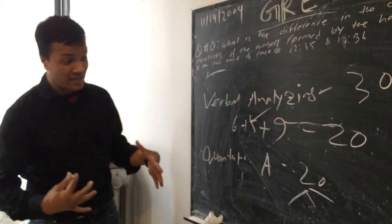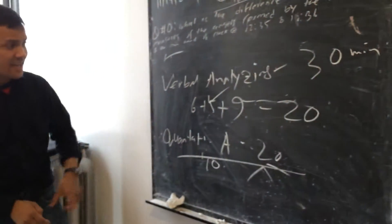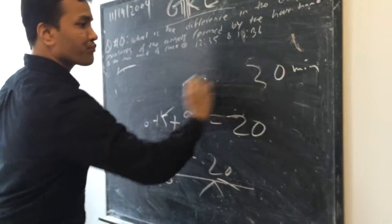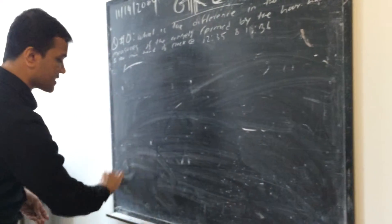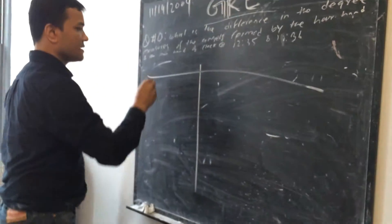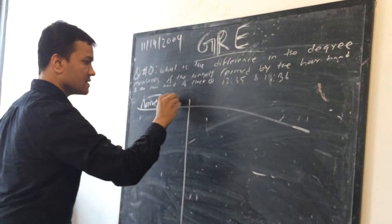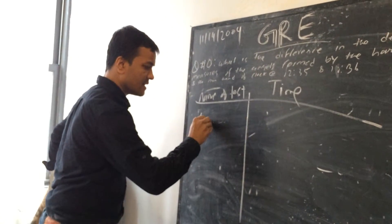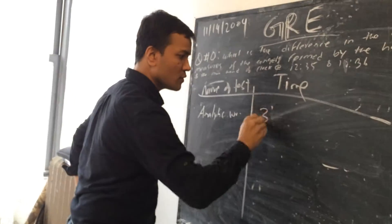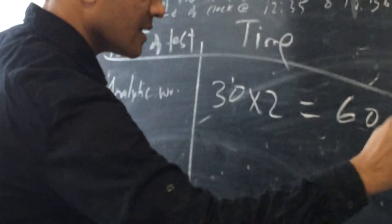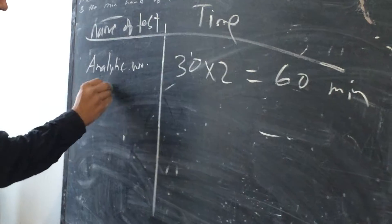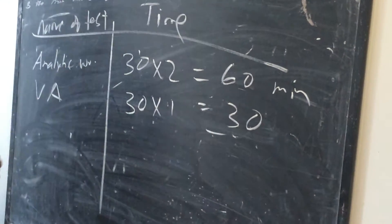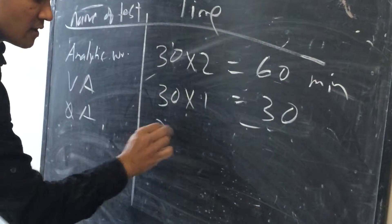There are also Quantitative Analysis questions — 20 questions divided into three parts: quantitative comparison, data interpretation, and discrete question types. After these sections you get a 10-minute break, then again Verbal Analysis and then Quantitative Analysis in the same way. The Analytic Writing section is 60 minutes, Verbal Analysis is 30 minutes, and Quantitative Analysis is 45 minutes.